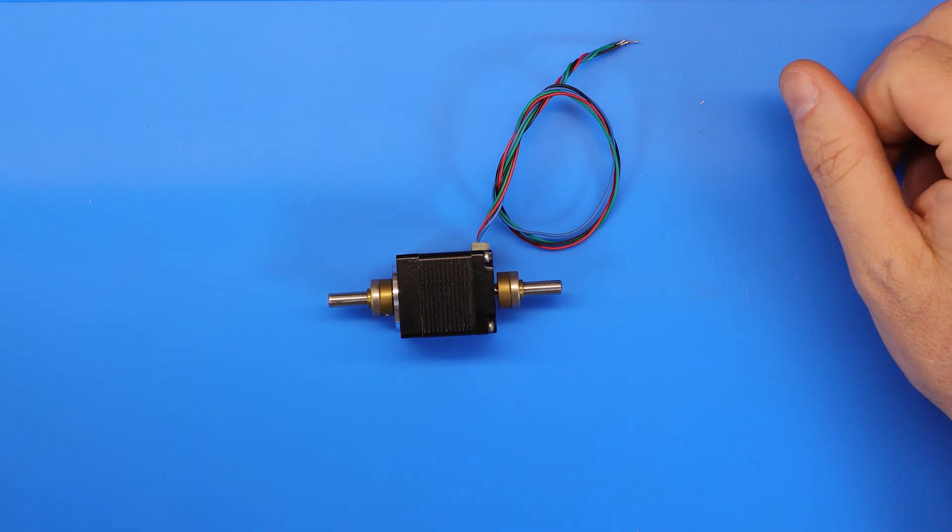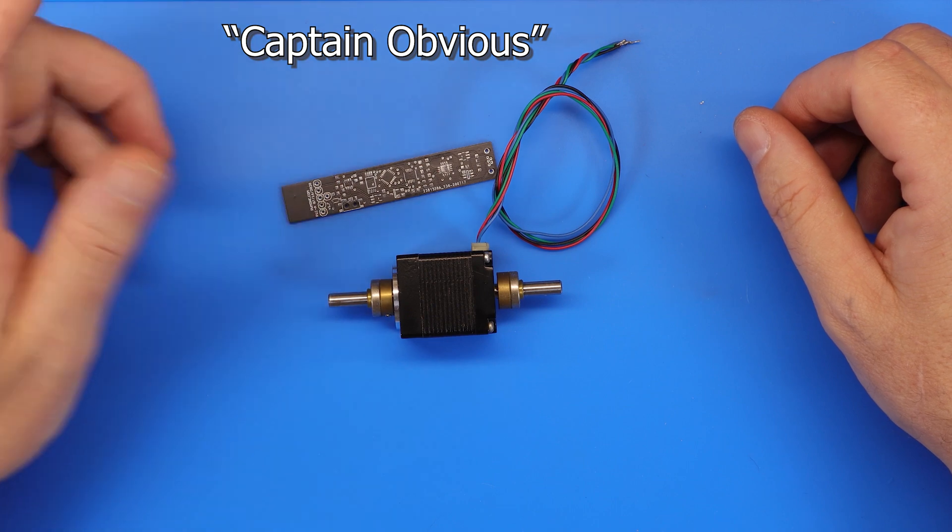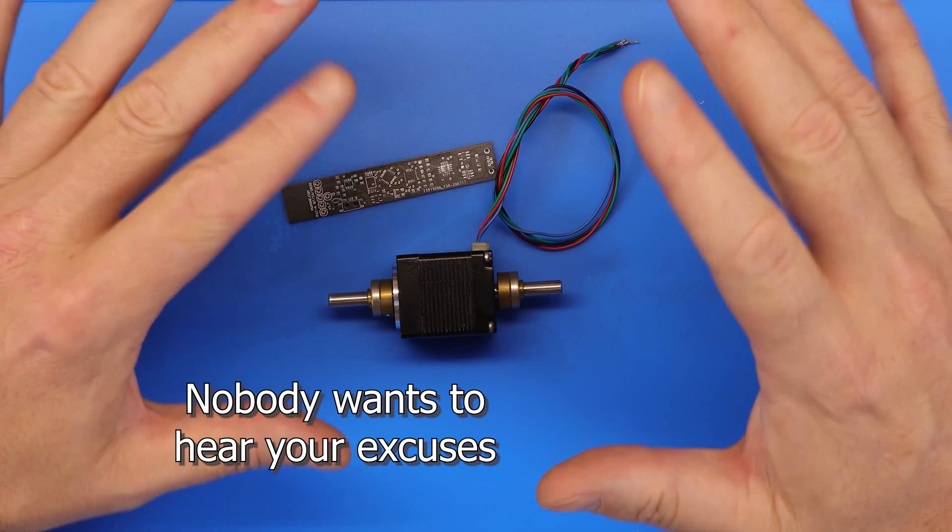I use a pick and place machine to place components on circuit boards. It does the job automated and makes it easier for shaky handed guys like me.